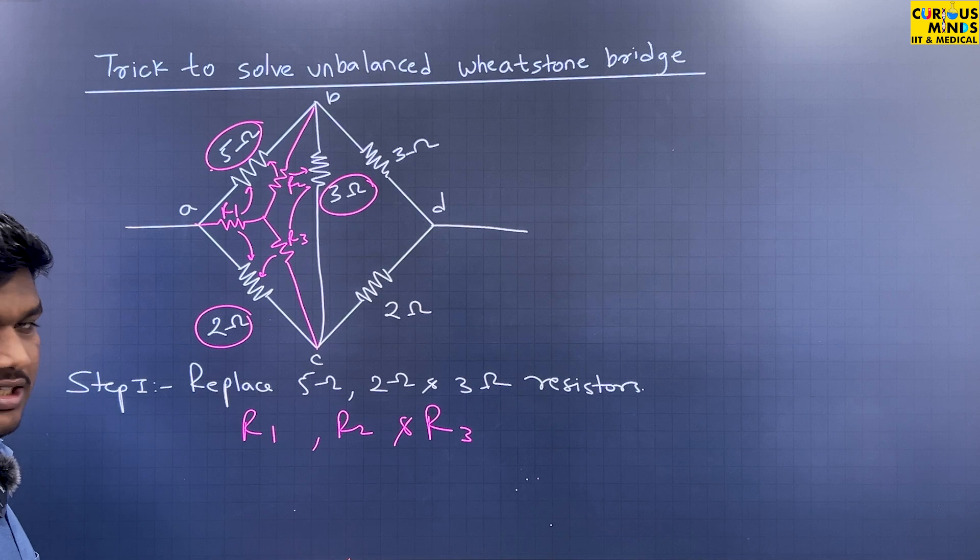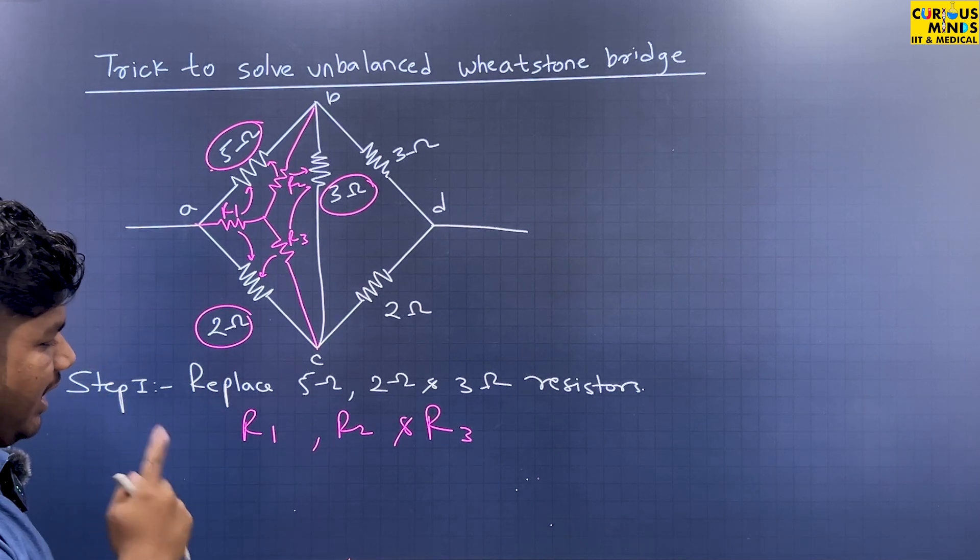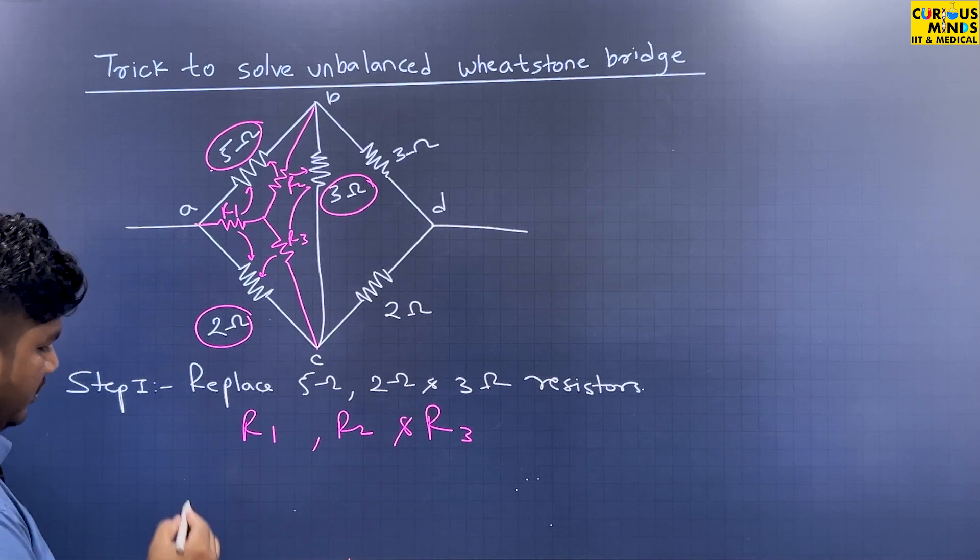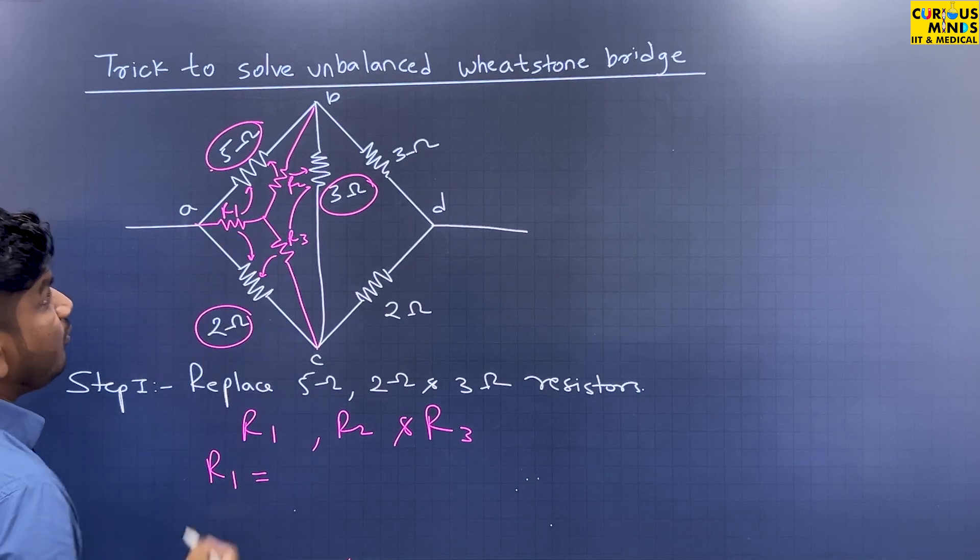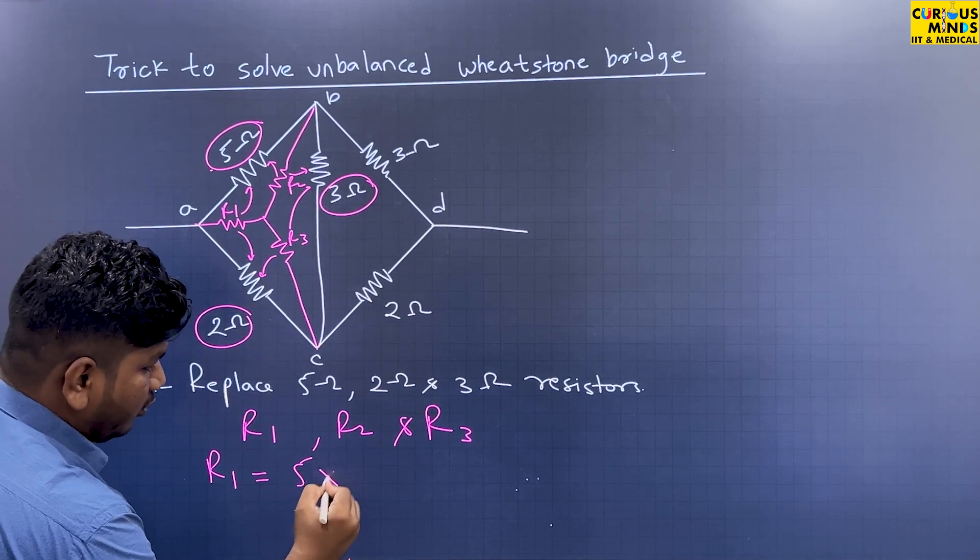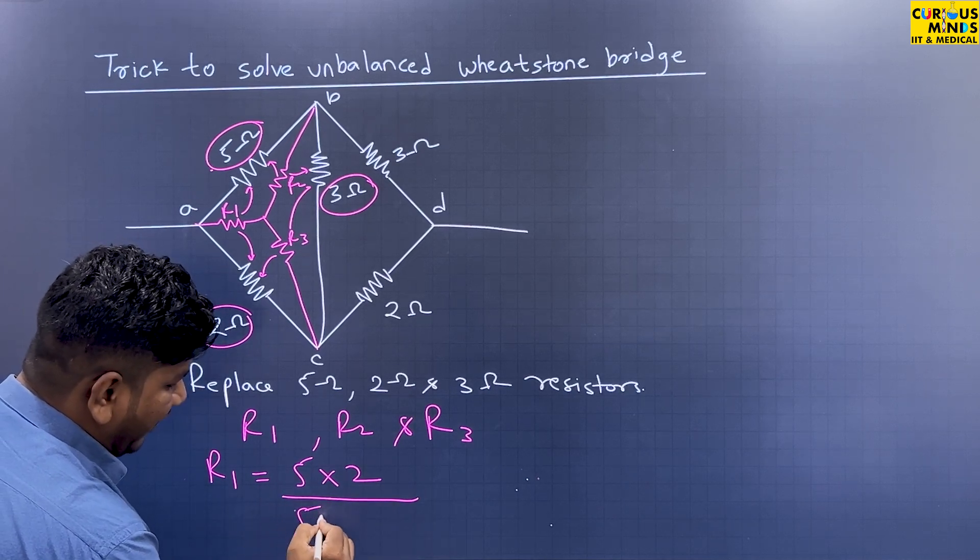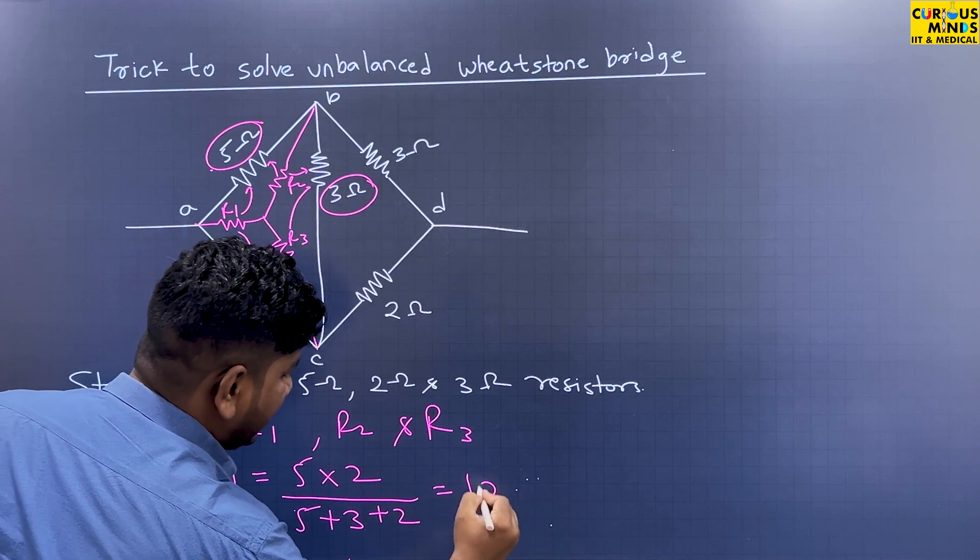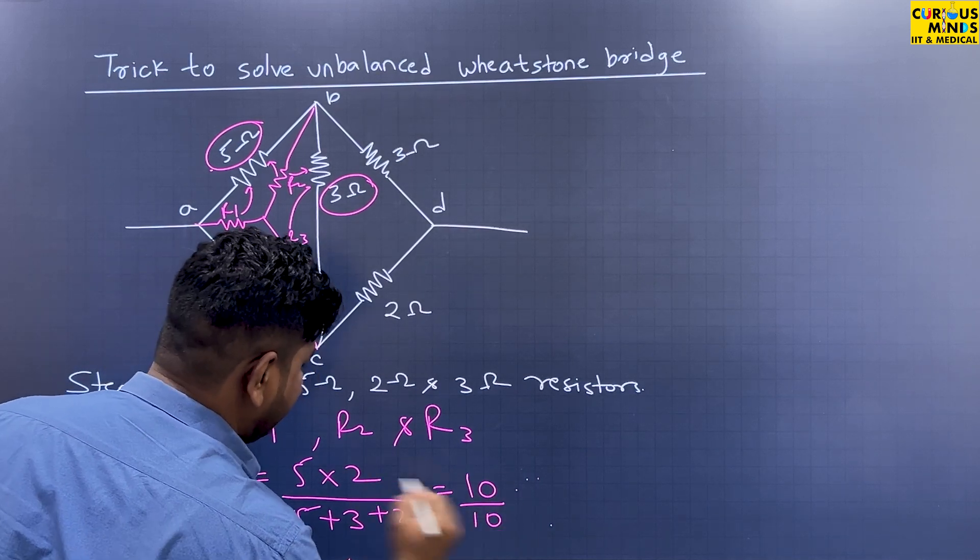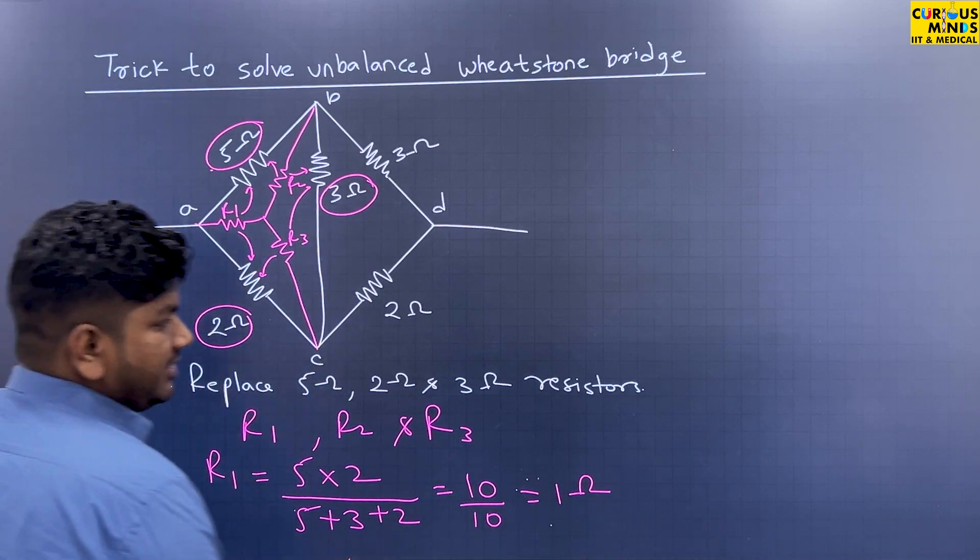So let's learn how to replace 5, 3, 2 with R1, R2, and R3. R1's neighboring resistances are 5 and 2. So 5 into 2 divided by the total ratio which is 5 plus 3 plus 2. So this will be 10 upon 10 which gives you 1 ohm.